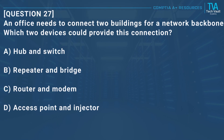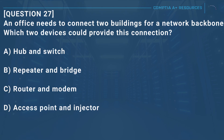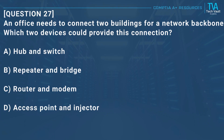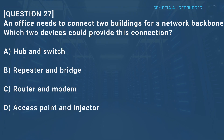Question 27: An office needs to connect two buildings for a network backbone. Which two devices could provide this connection? A, hub and switch. B, repeater and bridge. C, router and modem. D, access point and injector.